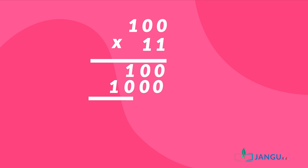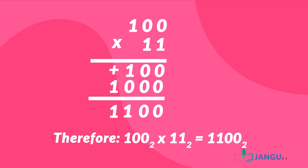Finally, should we add or subtract the partial products? Brilliant — we add them. Zero plus zero is zero, zero plus zero is zero, one plus zero is one. Then we bring down one, and therefore 100 in base 2 times 11 in base 2 is equal to 11100 in base 2. Good job for paying attention and participating in the lesson.